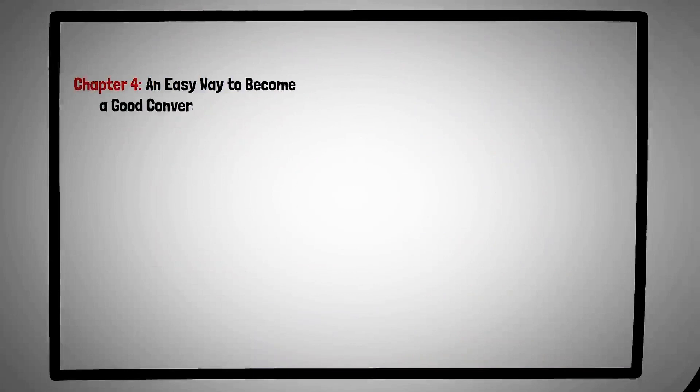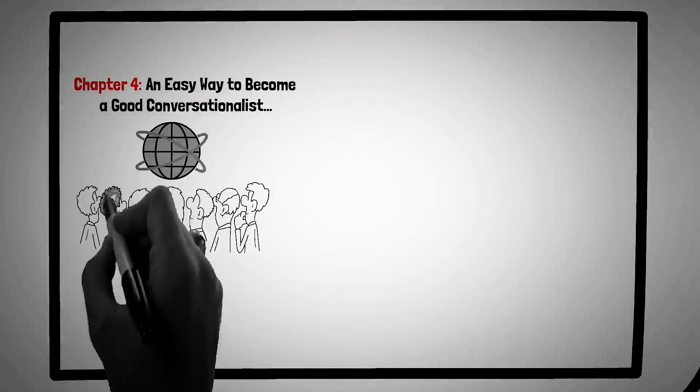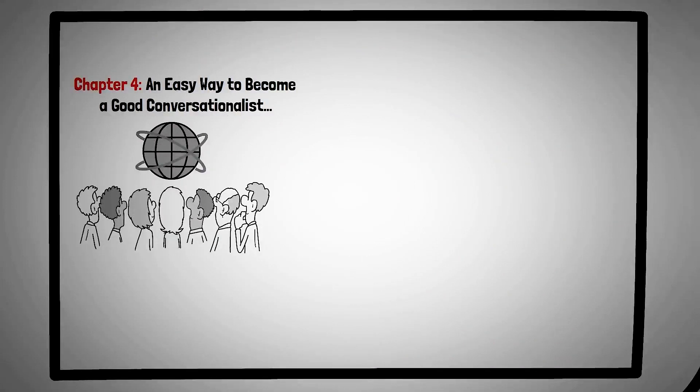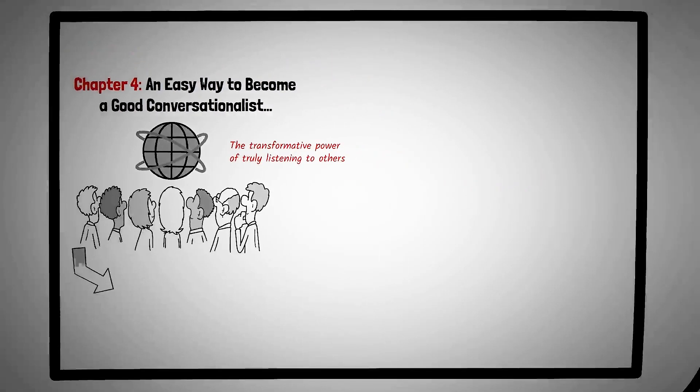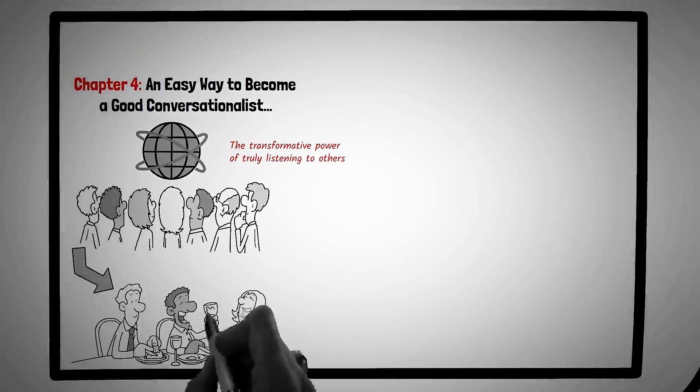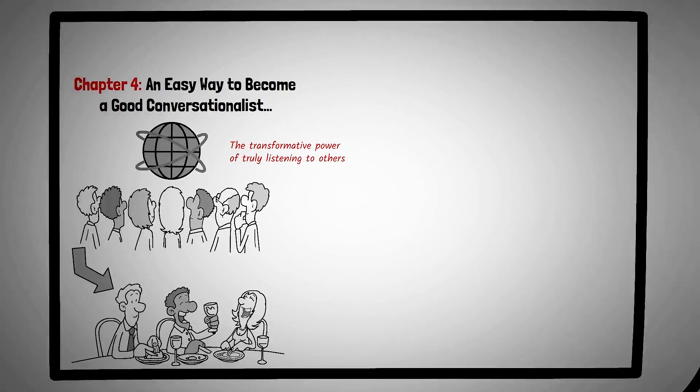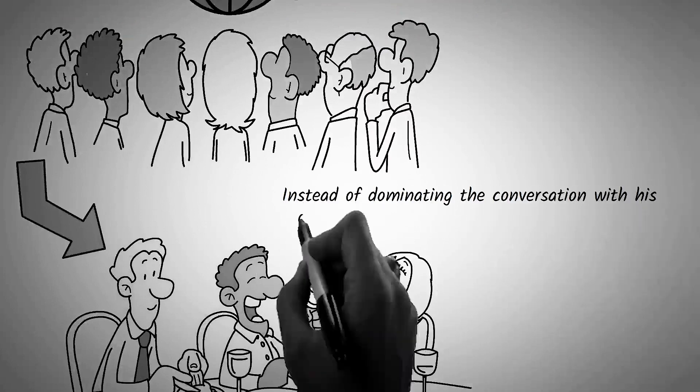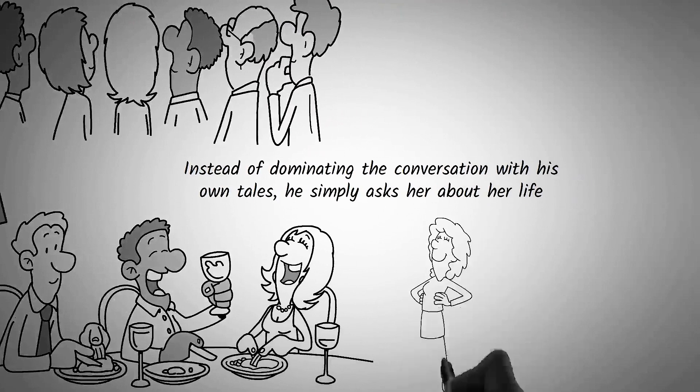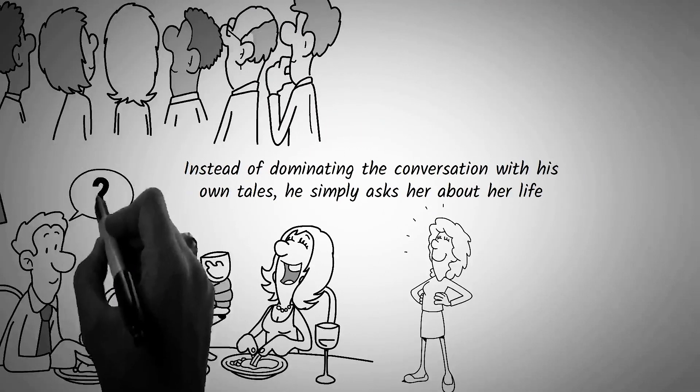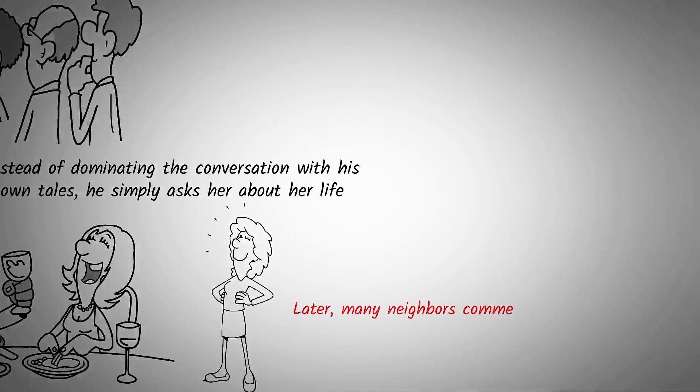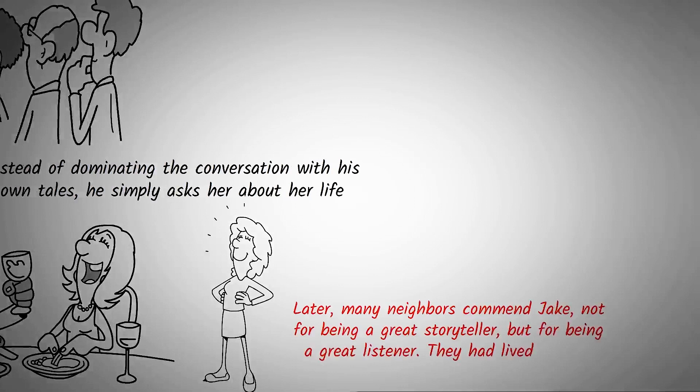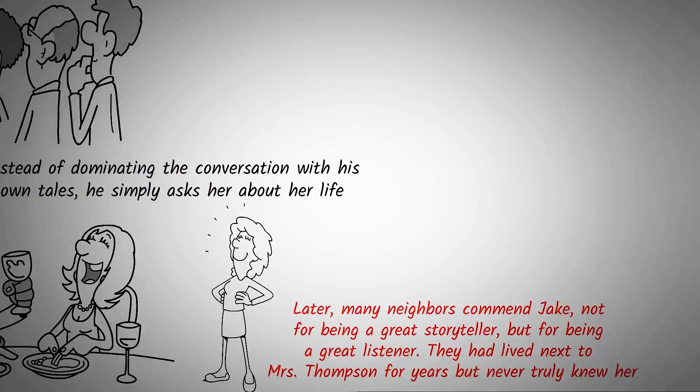Chapter four, an easy way to become a good conversationalist. In a world dominated by constant chatter and the urge to be heard, the art of listening stands out as a rare and valuable skill. This chapter underscores the transformative power of truly listening to others, emphasizing its role in fostering deeper connections and understanding. Consider Jake, a middle-aged man attending a neighborhood barbecue. While most are engrossed in their own stories, Jake takes a seat next to a quiet, elderly woman named Mrs. Thompson. Instead of dominating the conversation with his own tales, he simply asks her about her life. As she begins to share stories from her youth, Jake listens intently, asking questions and showing genuine interest. By the end of the evening, a small crowd has gathered around them, captivated by Mrs. Thompson's tales. Later, many neighbors commend Jake, not for being a great storyteller but for being a great listener. They had lived next to Mrs. Thompson for years but never truly knew her. Jake's act of listening not only made Mrs. Thompson feel valued but also enriched the community with shared history and connection.